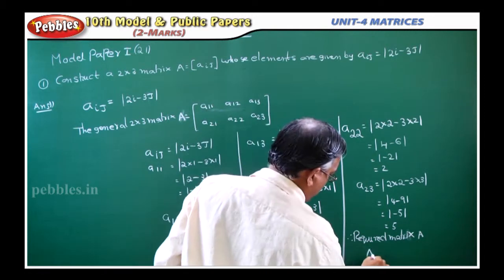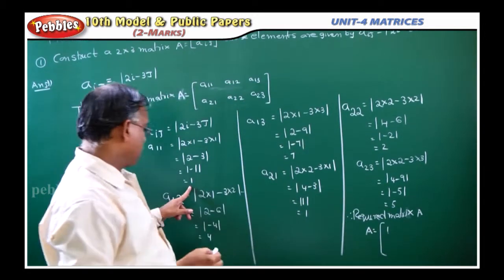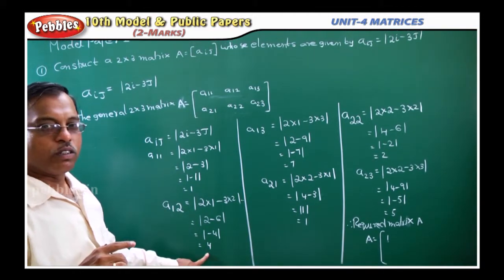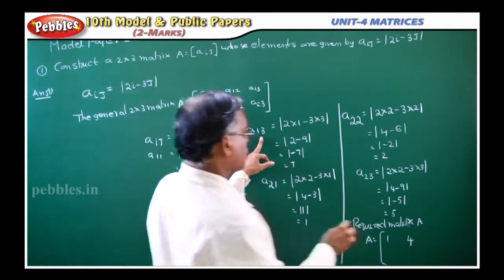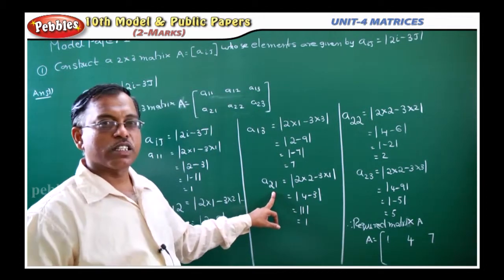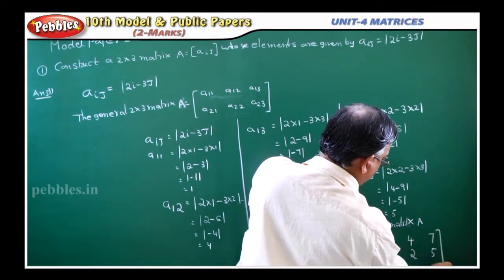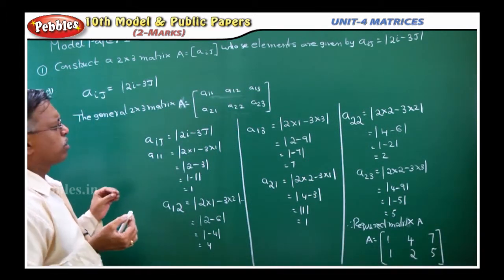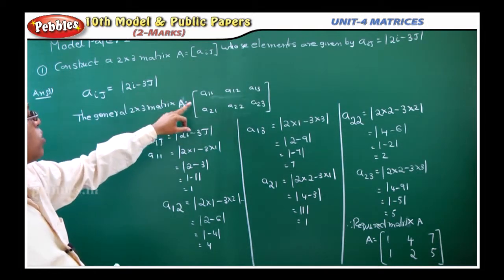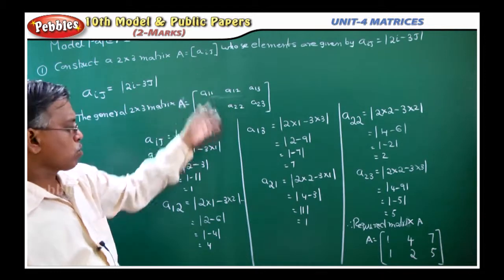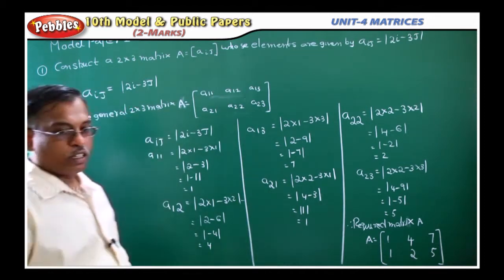Writing the matrix A: the first row elements are A₁₁ = 1, A₁₂ = 4, A₁₃ = 7, and the second row elements are A₂₁ = 1, A₂₂ = 2, A₂₃ = 5. So this is your required matrix. The key point here is that you need to assume the general matrix form yourself. If they give a 2 by 3 matrix — 2 rows, 3 columns — evaluate all elements using the given definition and find all the values. We will see the next question.